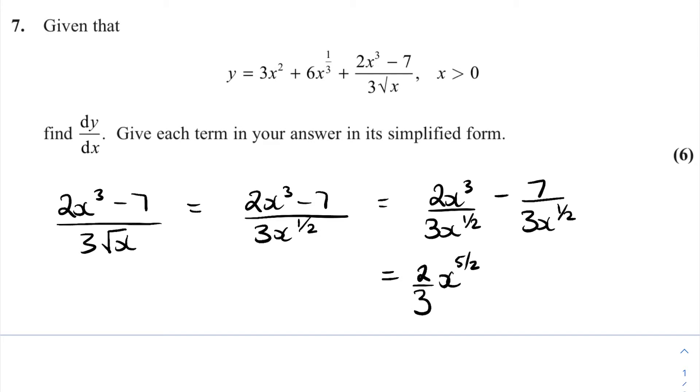And then 7 on the top, 3 on the bottom for the other term and it's 1 over x to the half which is x to the minus a half.